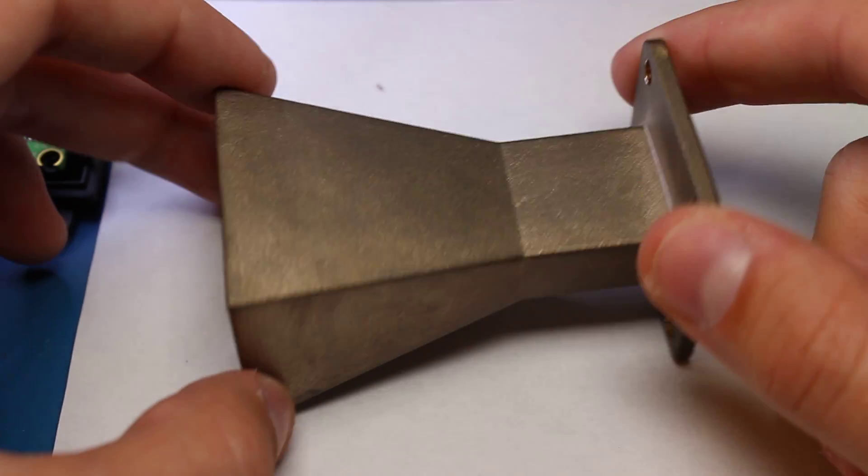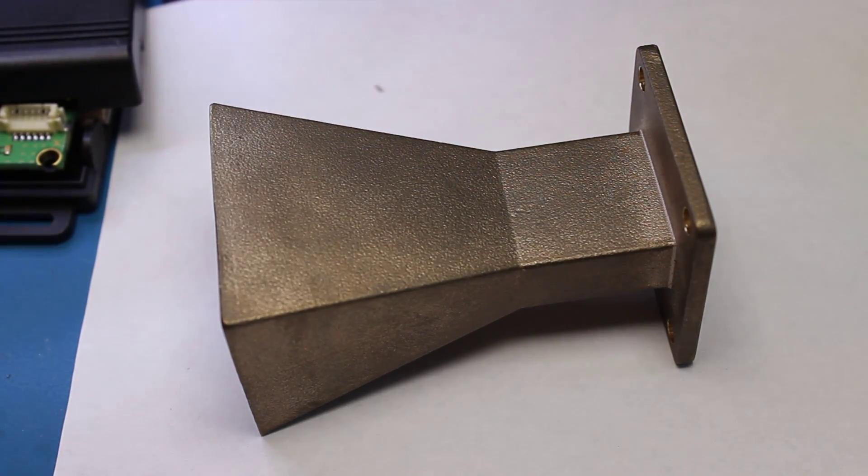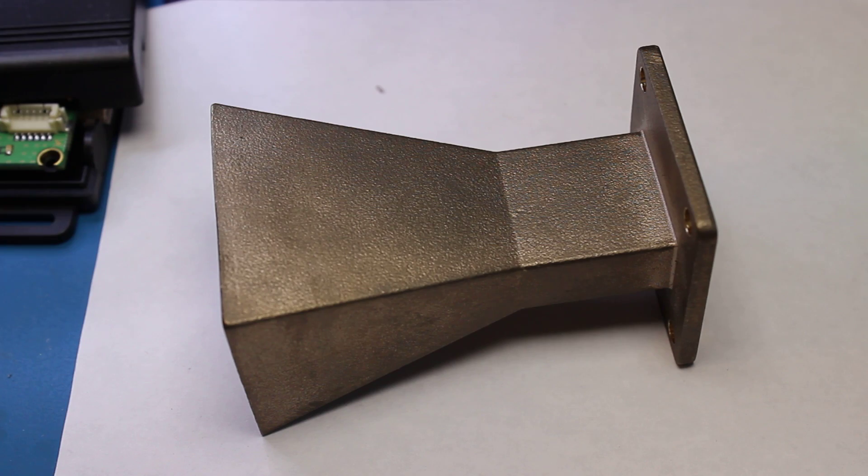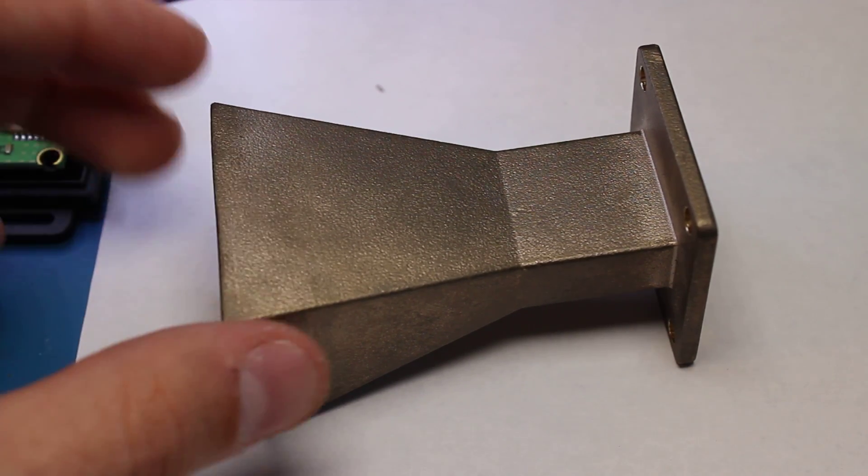Usually we just see that on a computer screen, and you can look at a 3D model and spin it around, but I wanted to get a more intuitive feel for what it actually was. So I simulated a real horn antenna and then 3D printed in color what the radiation pattern looks like.